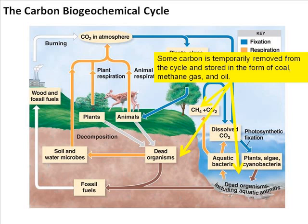However, over time, some carbon atoms will be temporarily removed from the carbon biogeochemical cycle. They're going to be stored in the form of coal, methane gas, and oil — known collectively as fossil fuels. Some archaea organisms live in the oceans and produce methane gas. Because of water pressure, this methane gas sinks to the bottom of the oceans and stays there, forming a thick layer. Also, trees and mammals that die and are not immediately decomposed by fungi will get buried inside the Earth, and with the pressure and temperature of the Earth, they will become fossilized — making petroleum products.